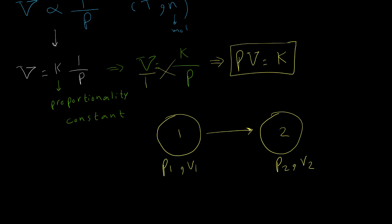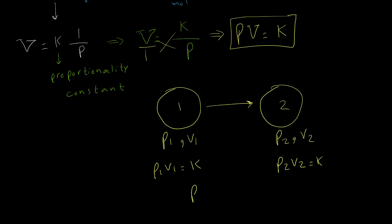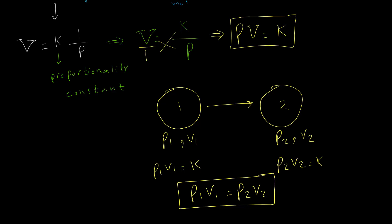Based on these equations, p1·v1 equals k, and p2·v2 also equals k. So we are able to write p1·v1 = p2·v2. This is the actual formula known as Boyle's Law, and we are going to use this equation to solve five problems in the second part of this video.